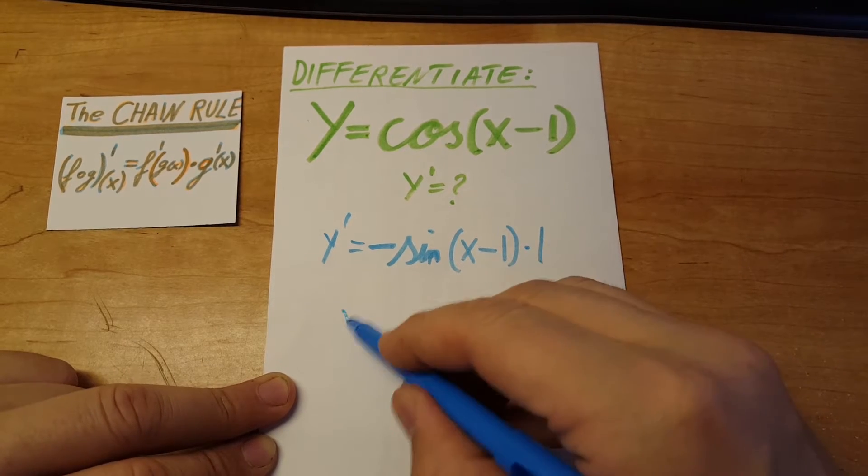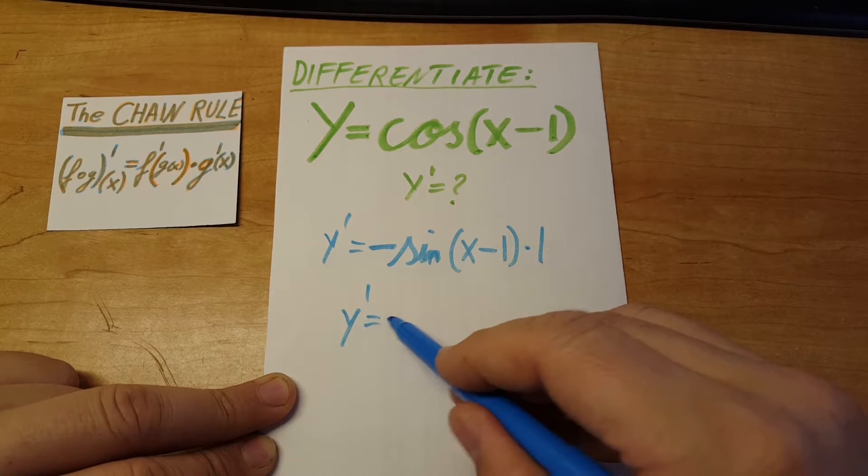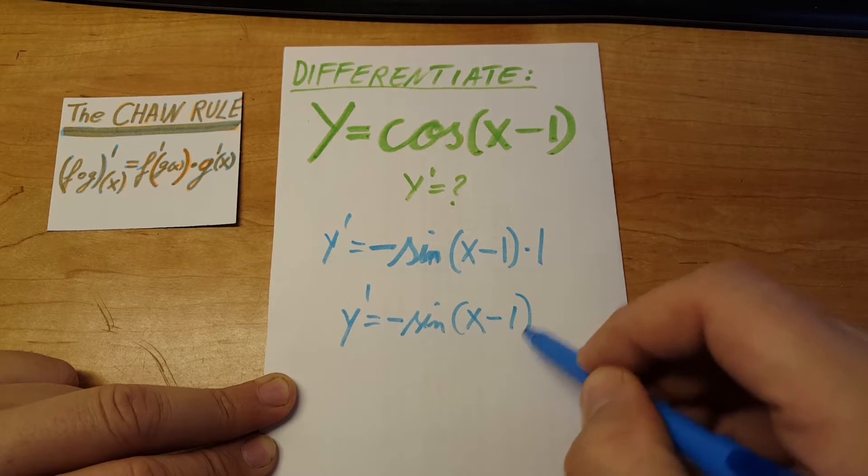There you go. So the derivative would be negative sine of x minus 1.